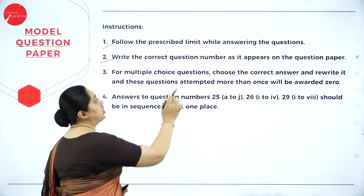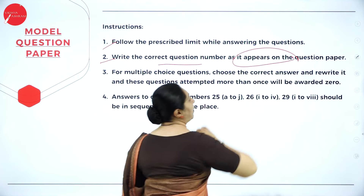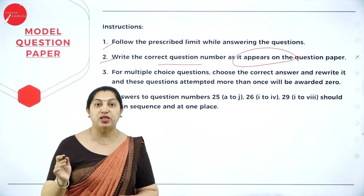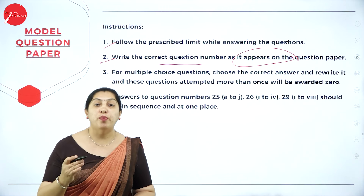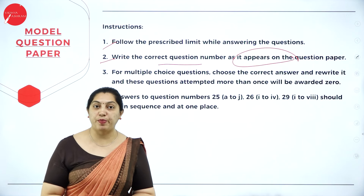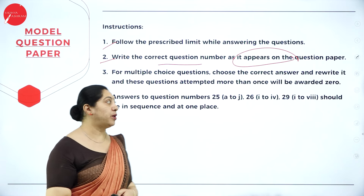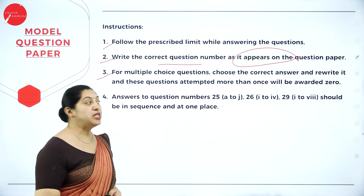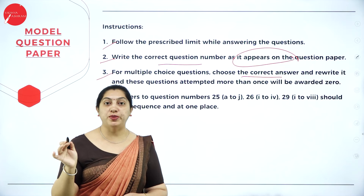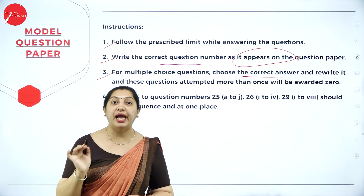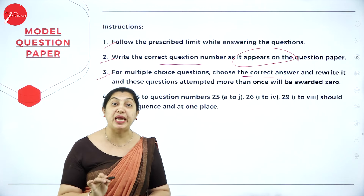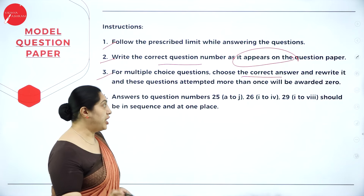Second: write the correct question number as it appears on the question paper, which is very important. In English, from question number one till question number 30, it's a continuous number. Make sure that whichever question you answer, you write the correct question number. Third: for multiple choice questions, choose the correct answer. Don't write just the option A, B, or C — you have to write the actual answer and rewrite it.